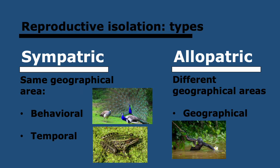Moving on to the HL content: there are two types of reproductive isolation — allopatric and sympatric. Allopatric is when you get split geographically. Sympatric is when you're in the same geographical area, and this is much less common. Sympatric isolation can be either behavioral or temporal. Behavioral isolation can involve differences in mating rituals — as with the peacocks shown — meaning they won't interbreed with the wrong species. Temporal isolation involves different timings for life cycle stages, meaning the mating seasons don't match. For example, the North American leopard frog and the bullfrog mate at different times of the year, meaning they can't interbreed. These are different ways in which species are prevented from interbreeding, so that under different selection pressures they can slowly diverge and become two separate species.